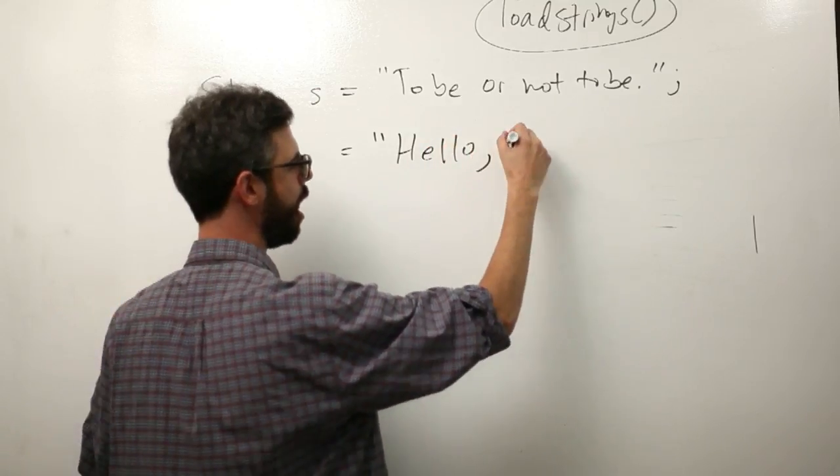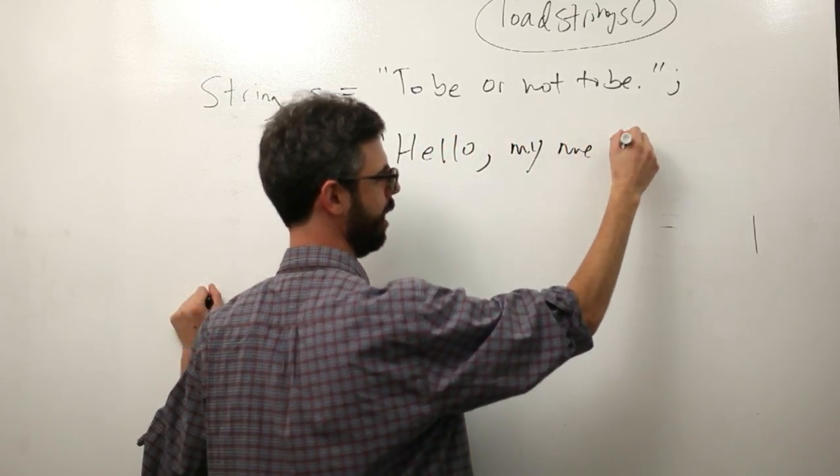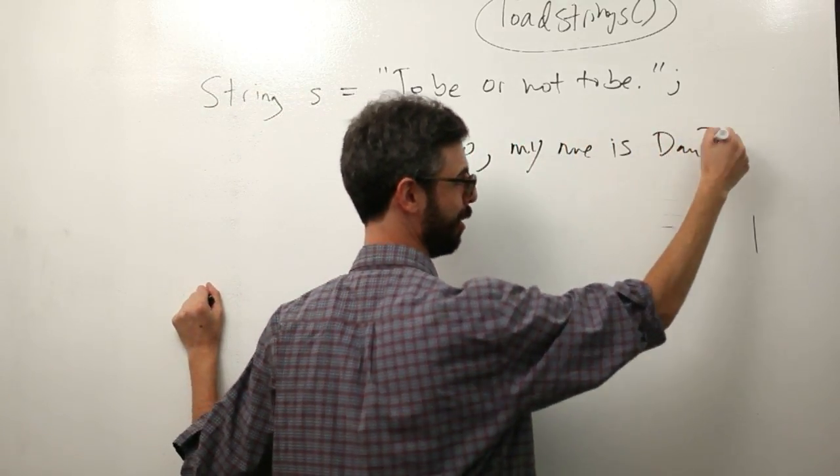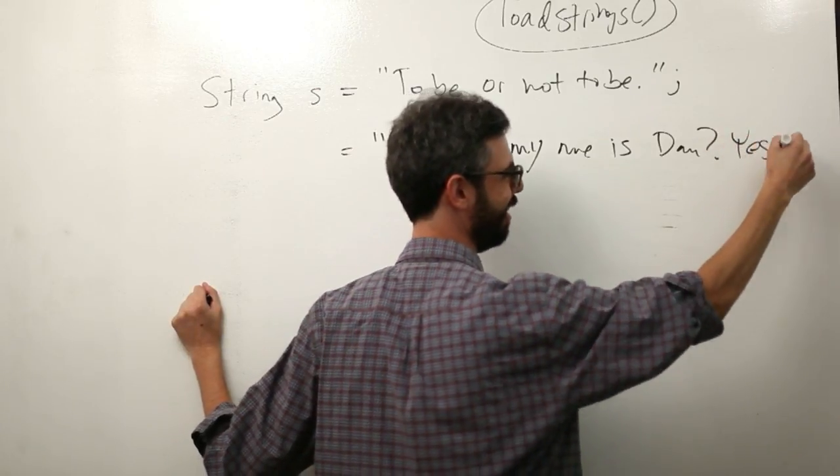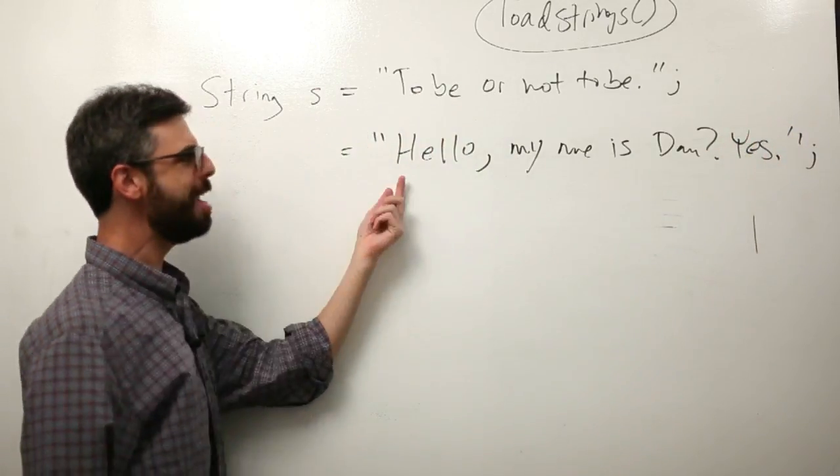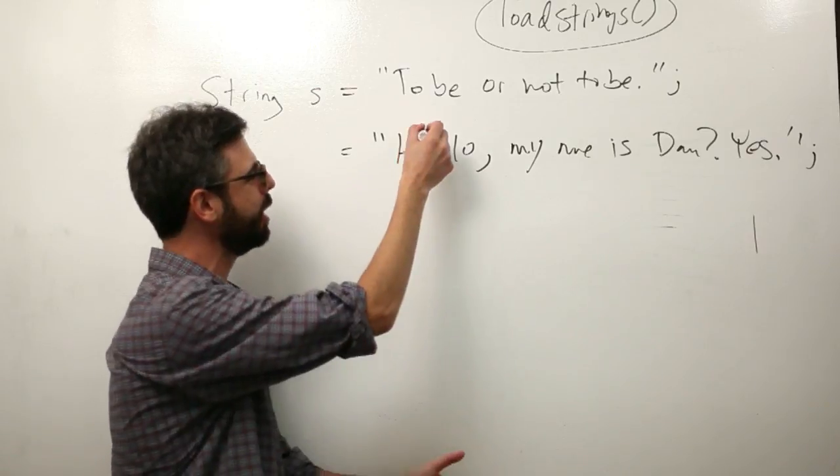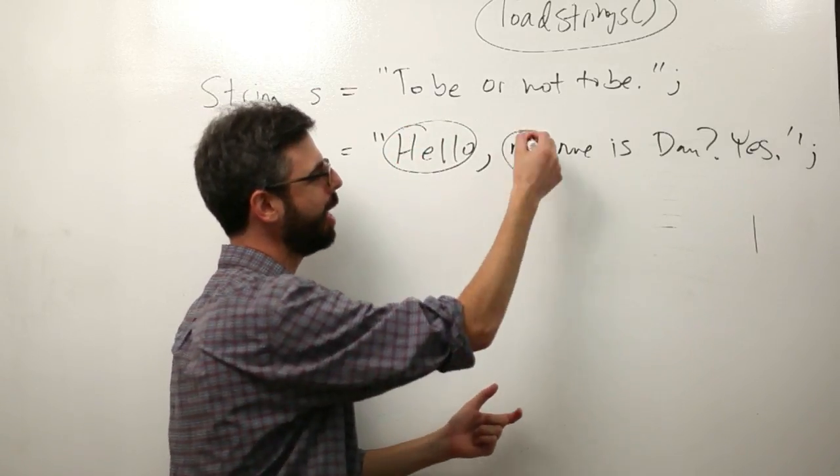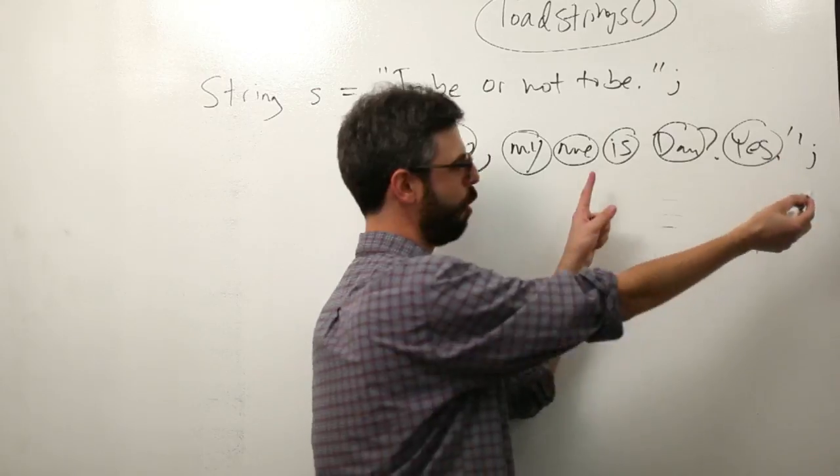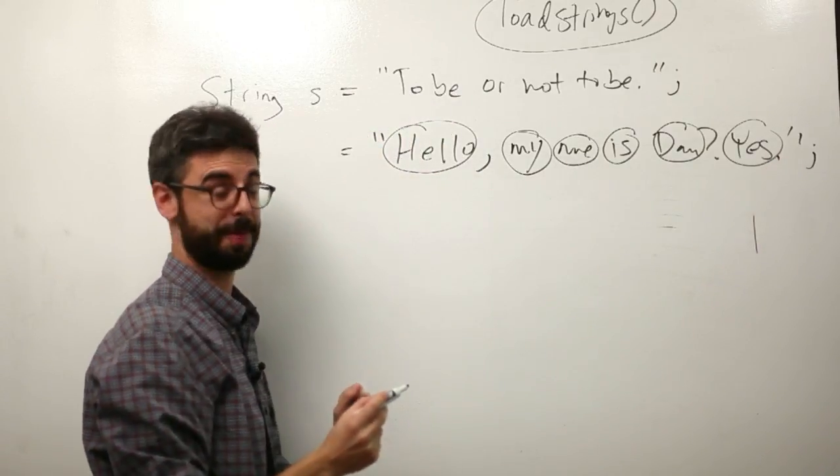When we go to actually count words, we looked at this before, but we have a scenario where our text looks something like this: 'Hello, comma, my name is Dan? Question mark? Yes.' So if this is our text, what I want is hello, I want my, I want name, I want is, I want Dan, I want yes. I don't want any of the punctuation and I don't want any of the spaces.